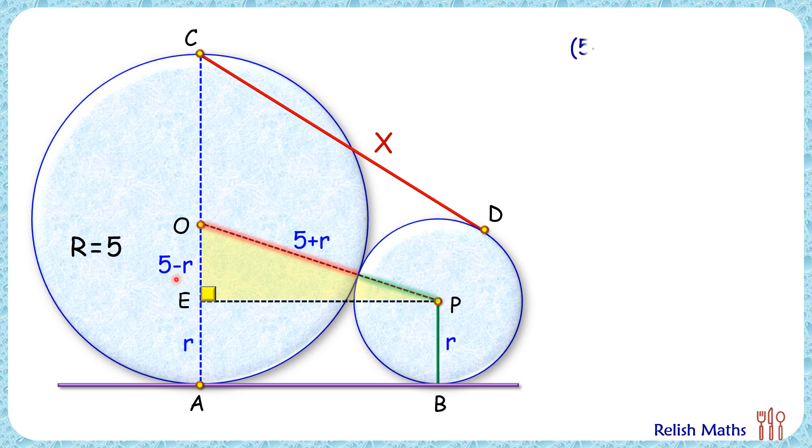we'll get (5 minus r)² plus EP² equals (5 plus r)². Simplifying this will get the value of EP² as 20r. Now let's join CP. Now in this right angle triangle CEP,